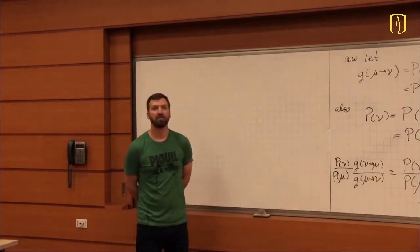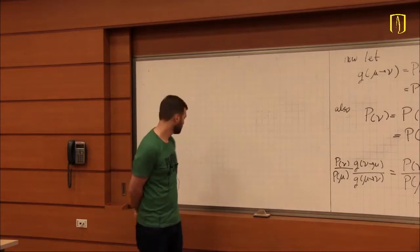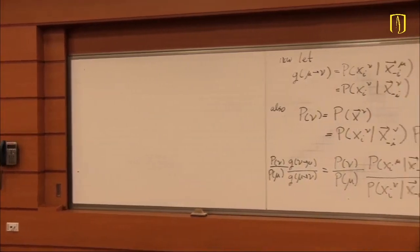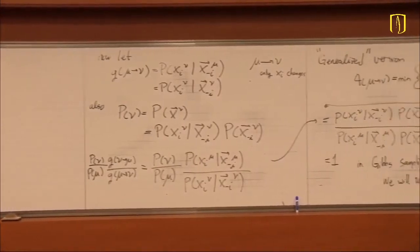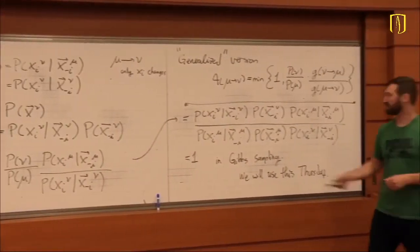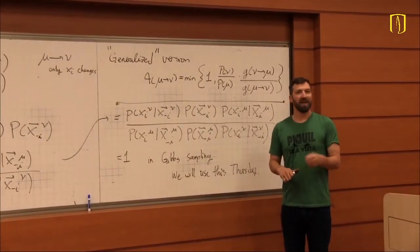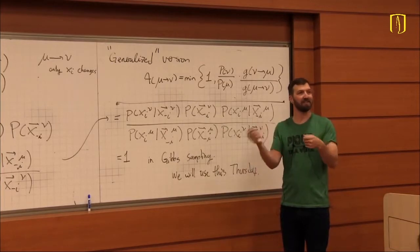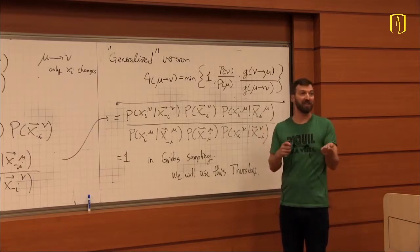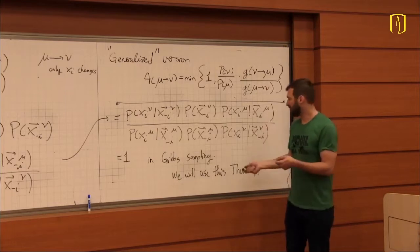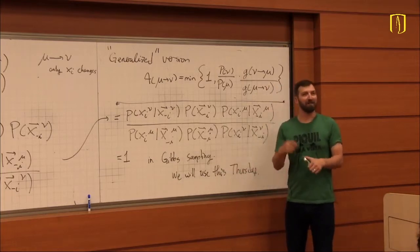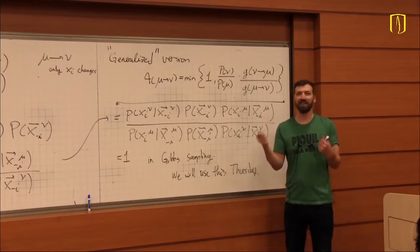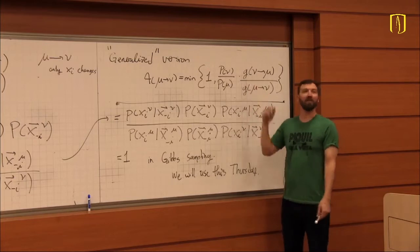In Gibbs sampling, you always accept — you simply replace the i-th coordinate with something drawn according to the conditional distribution. Once you do that, you accept it with acceptance ratio 1. It's different from the original Metropolis where you have a uniform selection and then an acceptance or rejection step. The rejection in Gibbs sampling manifests as configurations with very low conditional probability that basically never get chosen. It's changing the conditional probability into a different part of the algorithm.